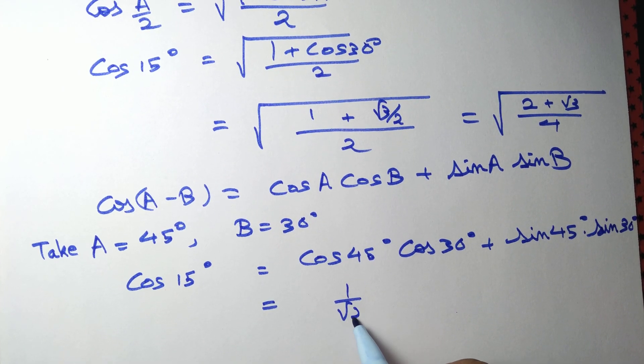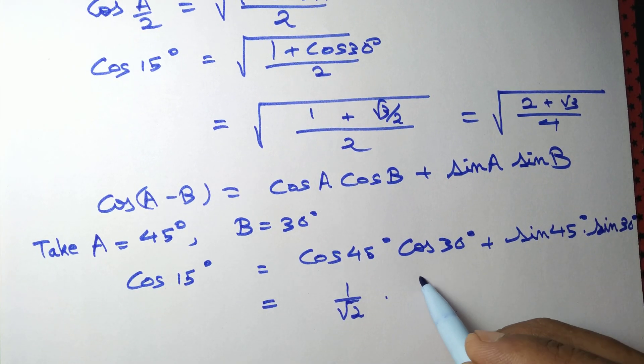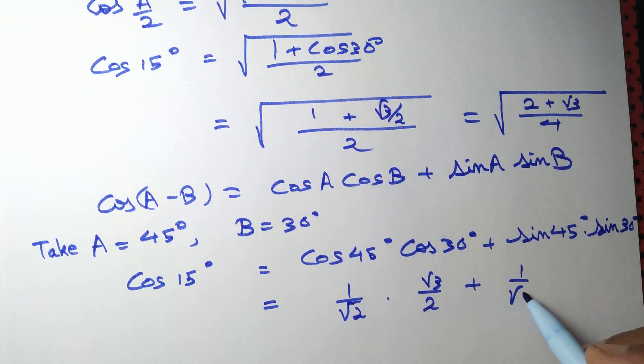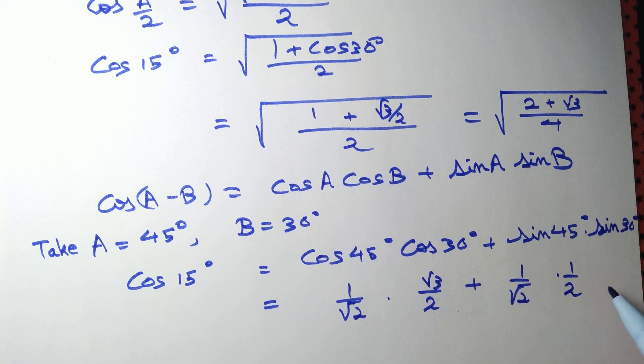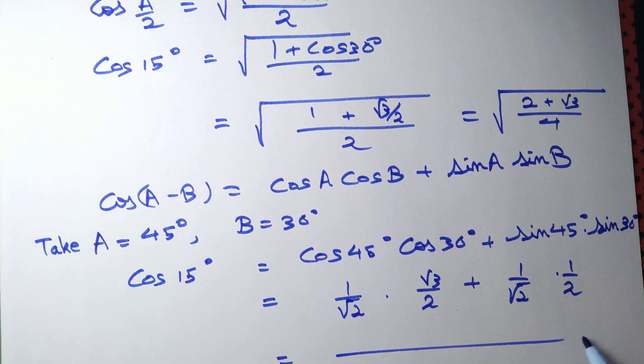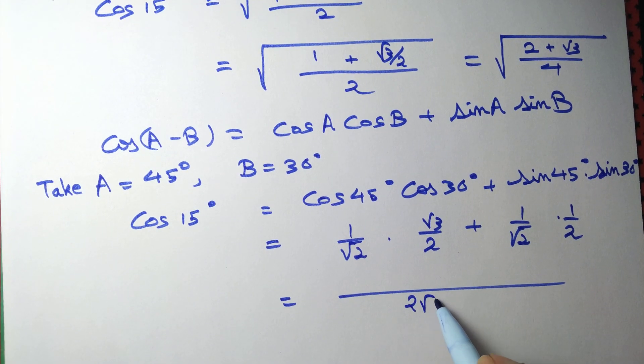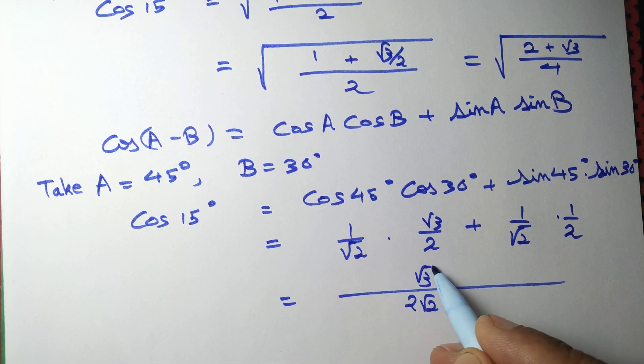cos 45° = 1/√2, cos 30° = √3/2, sin 45° = 1/√2, sin 30° = 1/2. So this equals (1/√2)(√3/2) + (1/√2)(1/2), which gives us (√3 + 1)/(2√2).